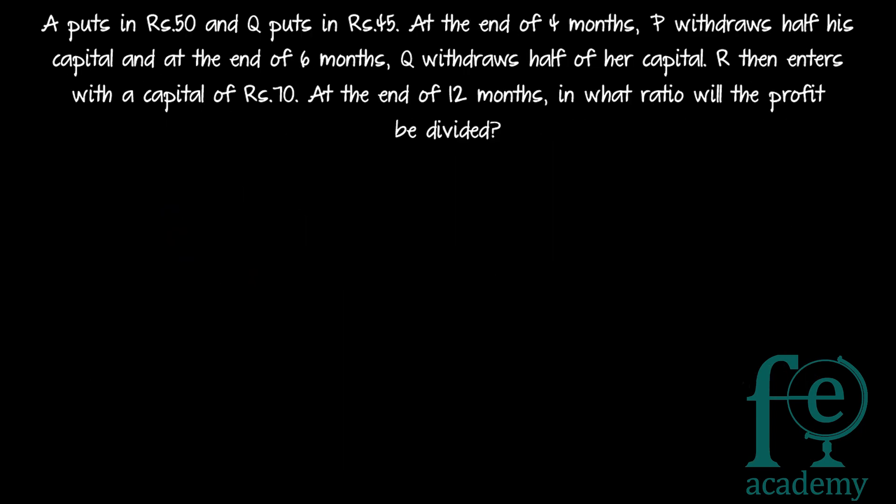Second question: P puts in rupees 50 and Q puts in rupees 45. At the end of four months, P withdraws half his capital, and at the end of six months, Q withdraws half of her capital. R then enters with a capital of rupees 70 at the end of six months. At the end of twelve months, in what ratio will the profit be divided? Only the ratio is asked; no profit amount is given.